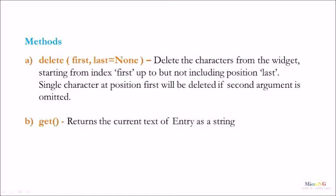The second method is get, which is used to return the current text of Entry as a string.